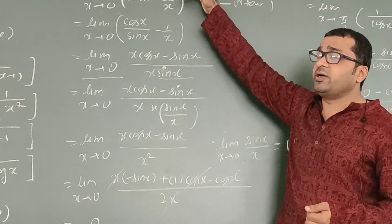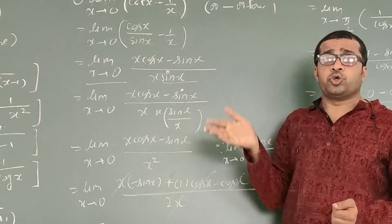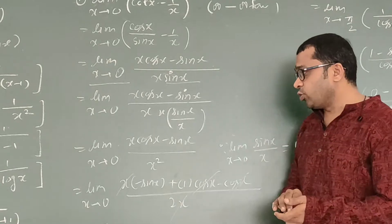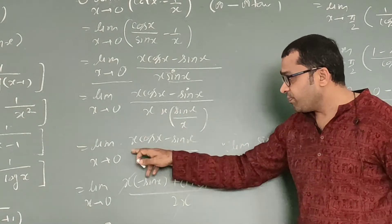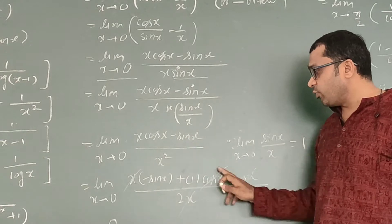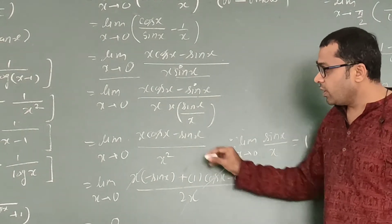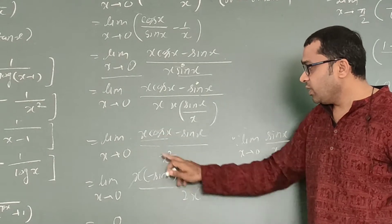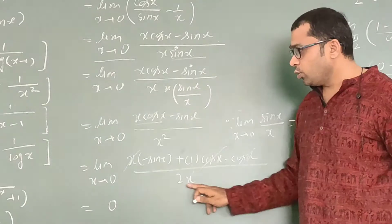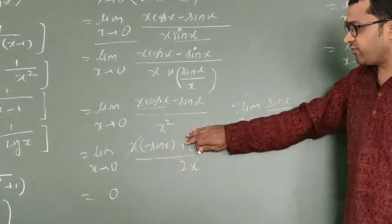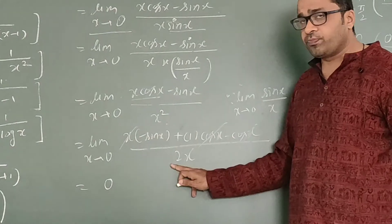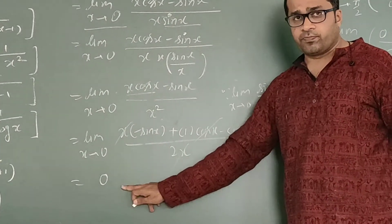This is the infinity minus infinity form converted to 0/0 form, so we can apply L'Hôpital's rule. Taking the derivative of the numerator: derivative of x cos x is cos x − x sin x, and derivative of −sin x is −cos x. The denominator derivative is 2x. The cos x terms cancel, leaving (−sin x) / (2x). Cancelling x gives −sin x / 2. Putting x = 0, sin 0 = 0, so the answer is 0.